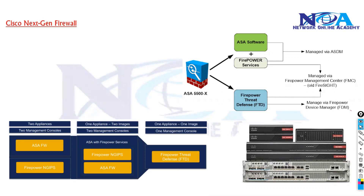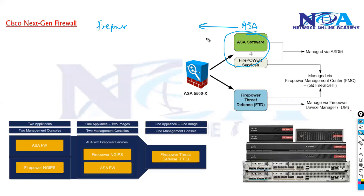Let's try to understand Cisco's next-generation firewall, which we call Firepower or Firepower Services. Cisco combines the ASA — you can have your normal standard firewall features inside the ASA — and you can combine the ASA with Firepower Services, which are the next-generation features supporting next-generation IPS and advanced malware protection.